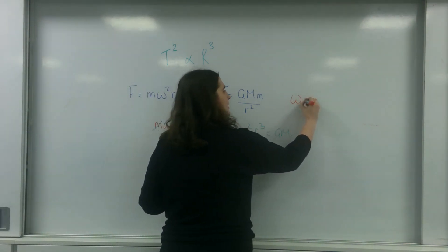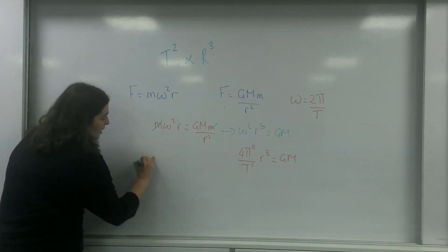So I'm actually quite close at the moment because I've got my r cubed, but I haven't got my T squared. So I'm going to replace omega with 2 pi over T, and I'm going to end up here with 4 pi squared over T squared times r cubed equals G M. I can rearrange that to get r cubed equals G M T squared over 4 pi squared.